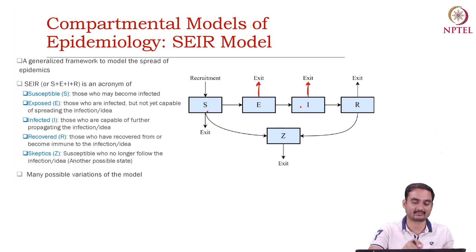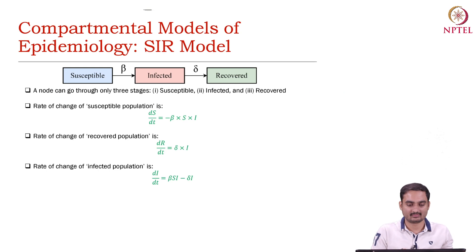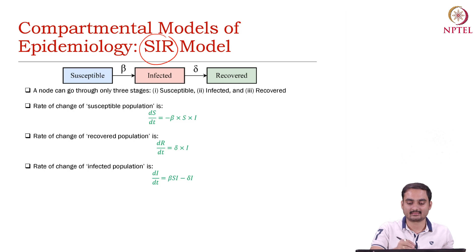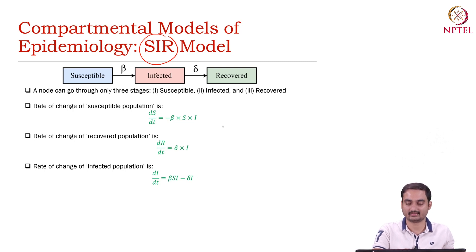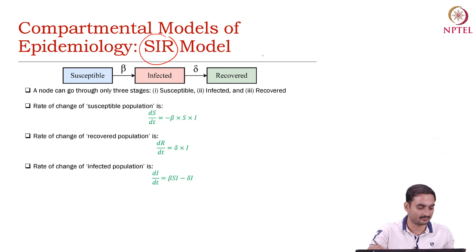For example, the first simple model is called the SIR model — Susceptible, Infected, and Recovery. Say you are susceptible to a certain disease, then you get infected with probability beta, then with probability delta you get recovered. And once you get recovered, there is no chance that you will again become susceptible.